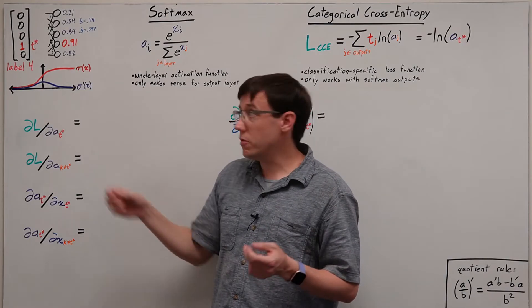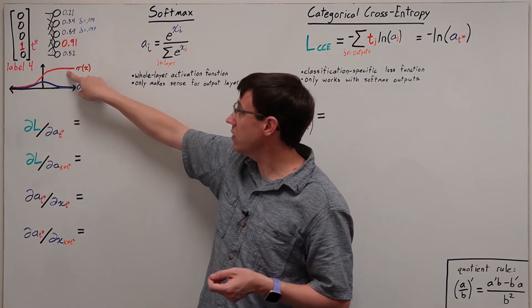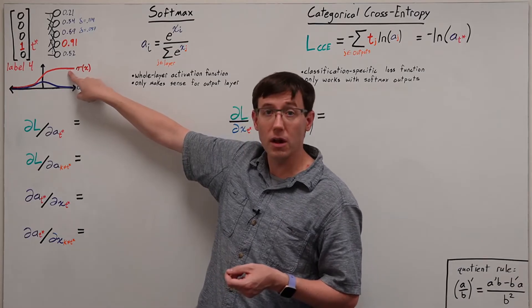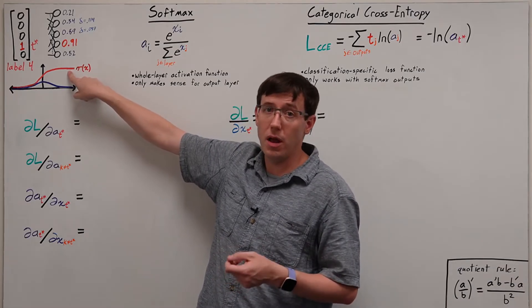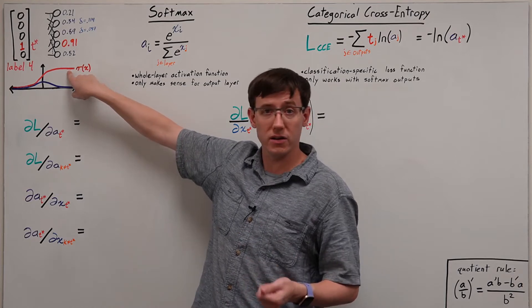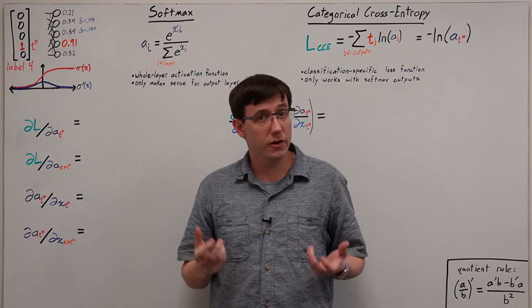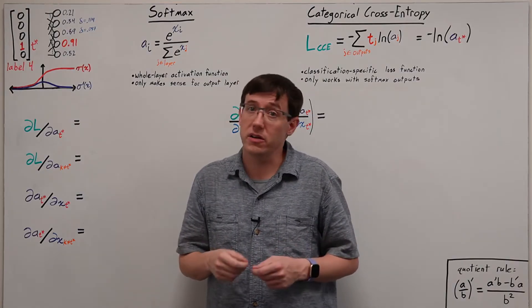That means that even though the error for this dimension is large, because the function is so flat out here, the derivative is small, and so we're not able to make a large update by gradient descent. And so if a sigmoid output layer is confidently wrong, that's very hard to fix.